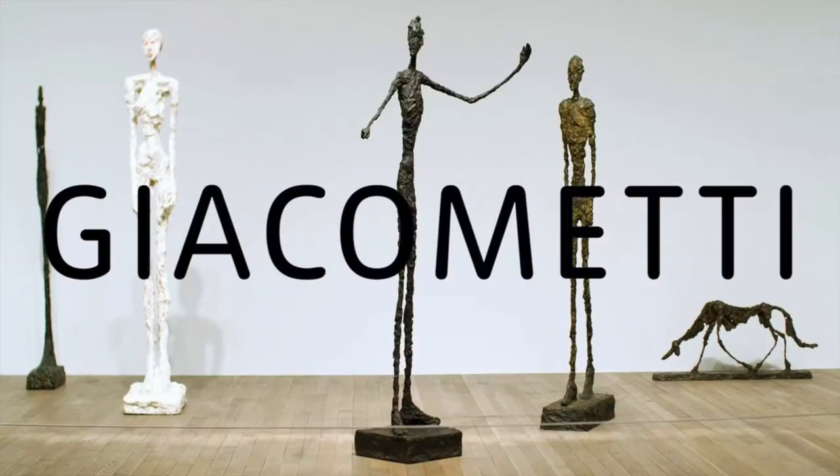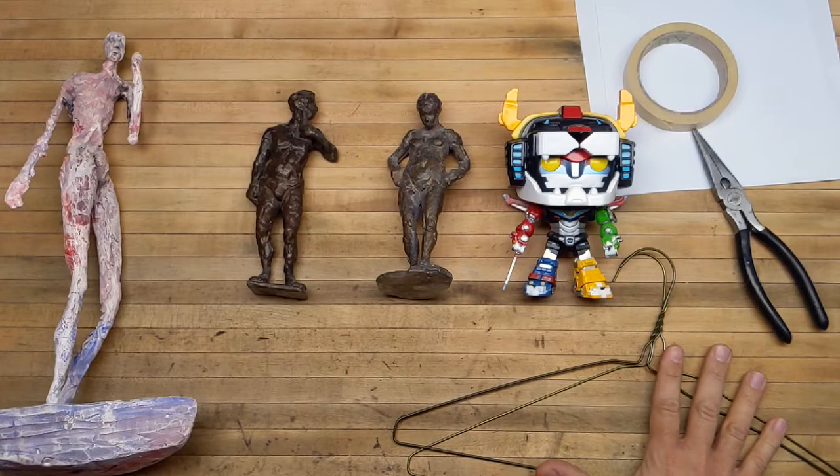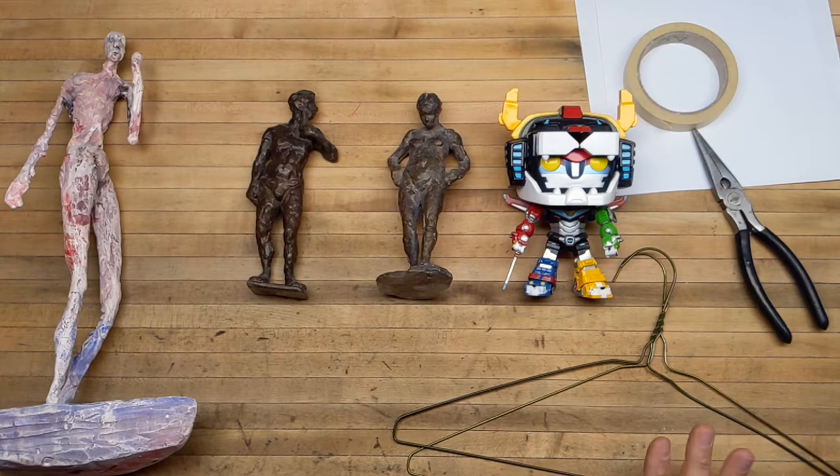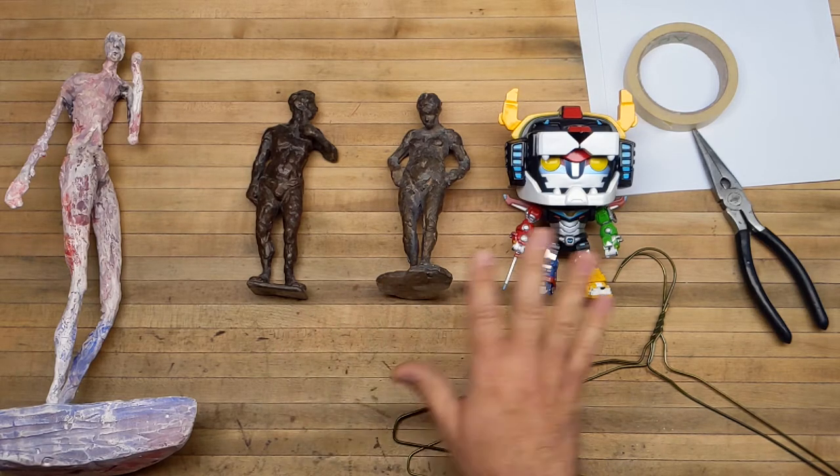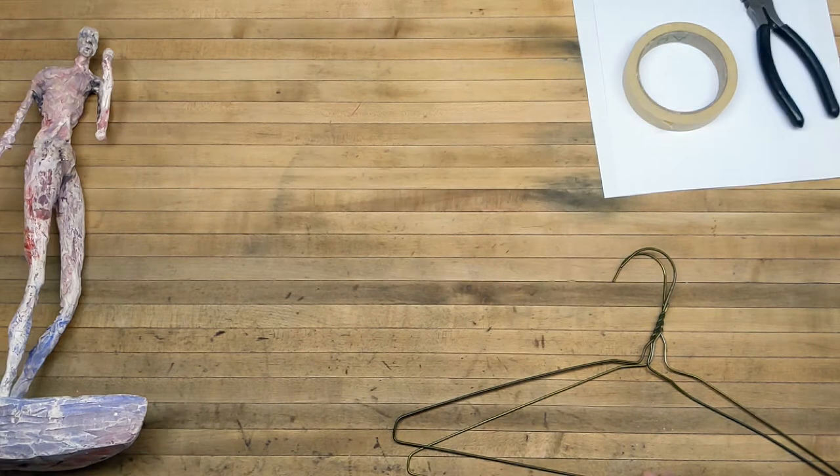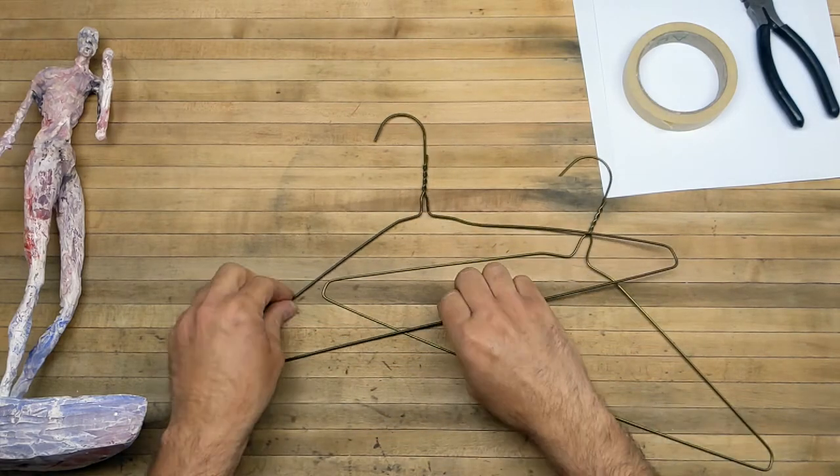The reason I'm going over this is I want you guys to think a little bit about proportion when you're doing this piece - about distorting your piece and elongating, making something really stretched out. I'm going to work with hangers and let the hangers kind of dictate this figure a little bit.